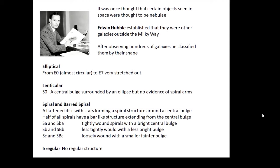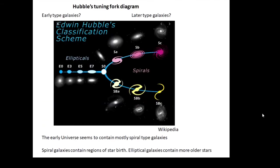The classification SA, SB, SC tells us how tightly wound the spirals are. Irregular galaxies have no regular structure. This is Hubble's tuning fork diagram, which is a way of remembering the classification of galaxies.